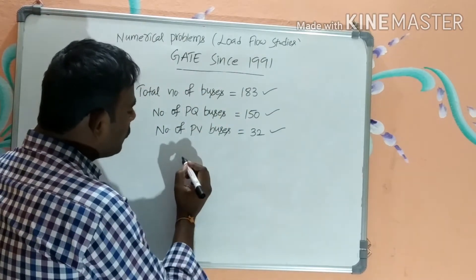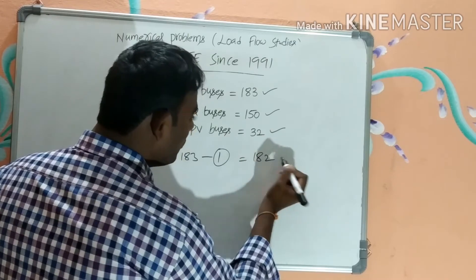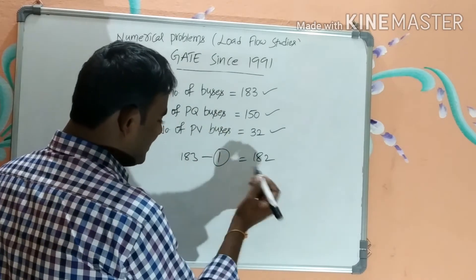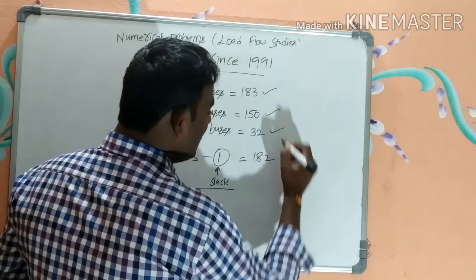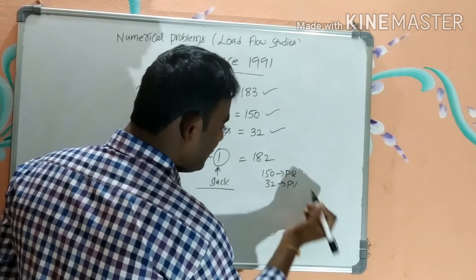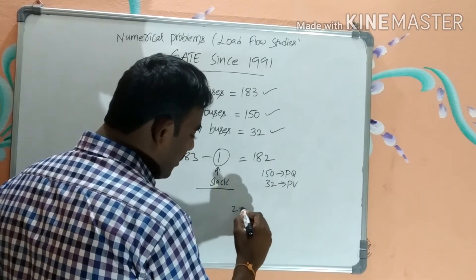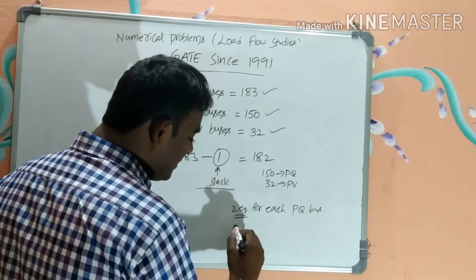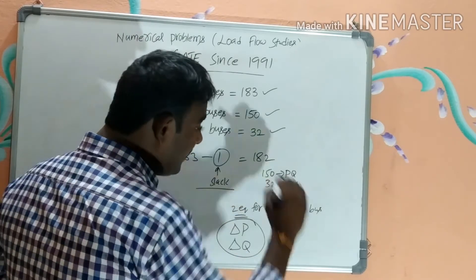Out of 182 buses, 150 are PQ buses and 32 are PV buses. For each PQ bus, we need two equations — one for delta-P and one for delta-Q.